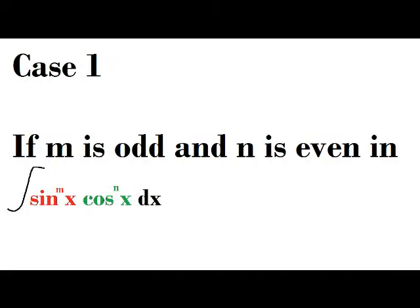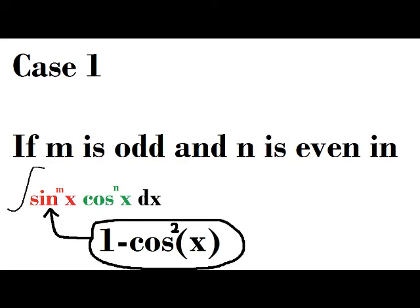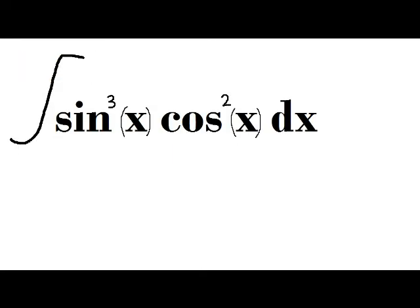If M is odd and N is even, then you will use 1 minus cosine squared to replace sine squared. As you can see, this problem started out with the integral of sine to the third power, x, cosine to the second power, x, dx.